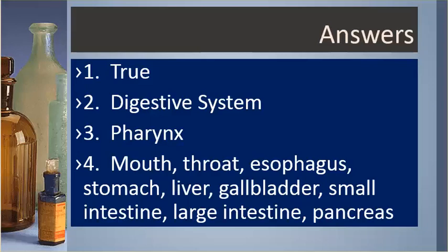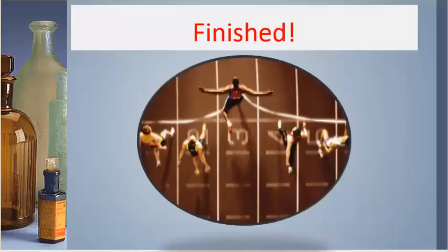Answers. Number one is true. Number two is digestive system. Number three is pharynx. Number four: mouth, throat, esophagus, stomach, liver, gallbladder, small intestine, large intestine, pancreas. Finished.